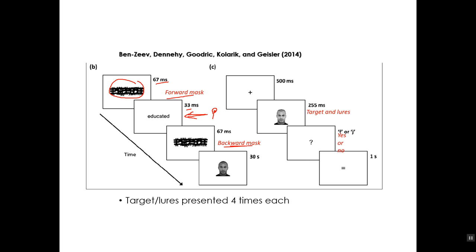Then they were exposed to a backward mask — to fill up the visual sensory register, to erase the prime. So the subjects are only seeing the prime for 33 milliseconds; they can't go back into iconic memory and retrieve it, which you could do if they didn't have the backward mask. Then for 30 seconds you see the target face and study it. There's a focusing dot for half a second, and then for 255 milliseconds you see this comparison face. Then you're asked whether it's a yes or a no — is this the same face? Press F for yes, press J for no, and they have one second to make that decision.